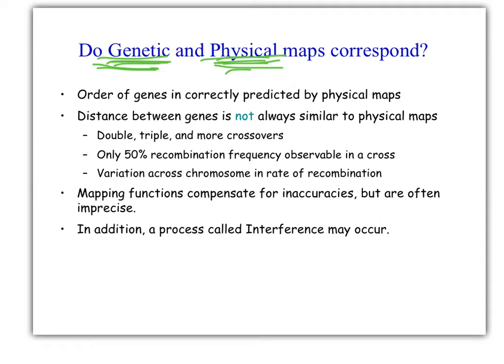The order of the genes is almost always correct when you predict them in a physical map, but the actual distance is not always similar because we take into consideration the double crossovers, but there's triples and others and lots of other stuff going on. We can only see 50% recombination in one of these crosses, and rates of recombination differ across chromosomes. In addition to all these things that cause inaccuracy, we also have this process called interference.